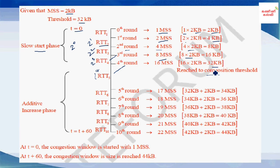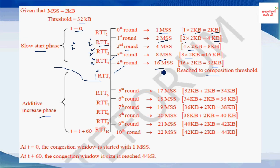Once the threshold of 32 is reached, slow start stops and additive increase begins. At the 5th round trip time, the previous size was 16 packets, so we add 1 segment: 16 + 1 = 17 packets. Since each segment is 2 KB, the window size is 34 KB. At the 6th round trip time: 17 + 1 = 18 packets, so window size is 36 KB.